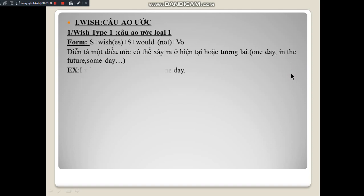For example: 'I wish I would go to Paris one day.' Here the signal words are 'wish' and 'one day,' so we apply the Type 1 wish clause formula - 'would go.'